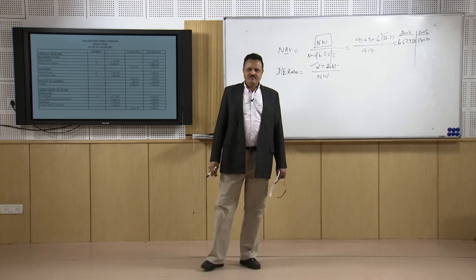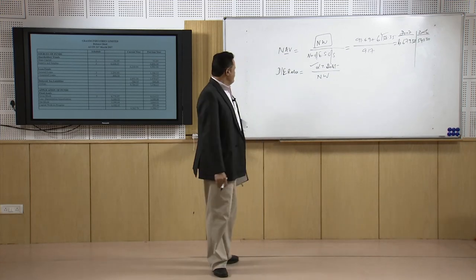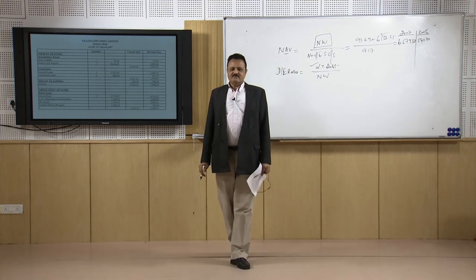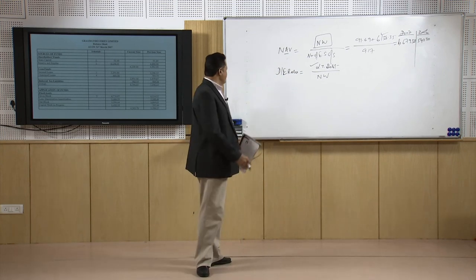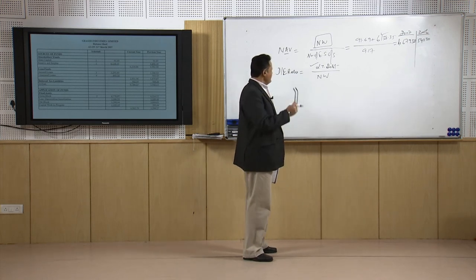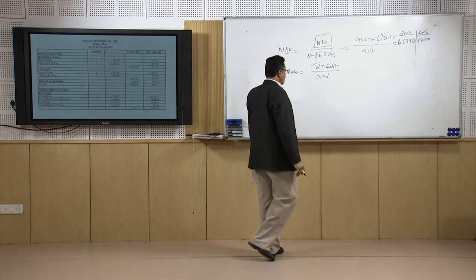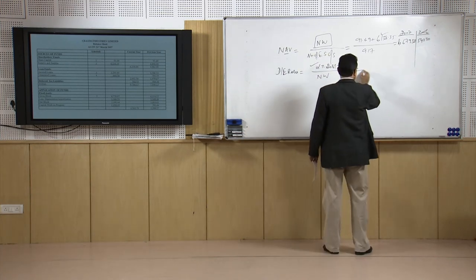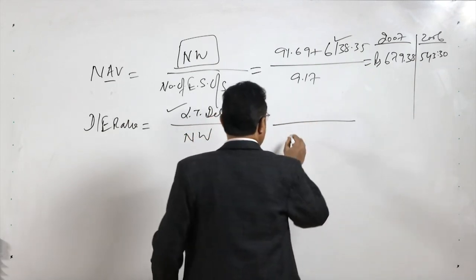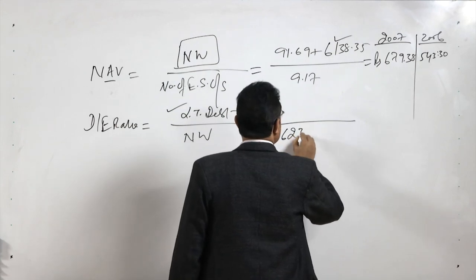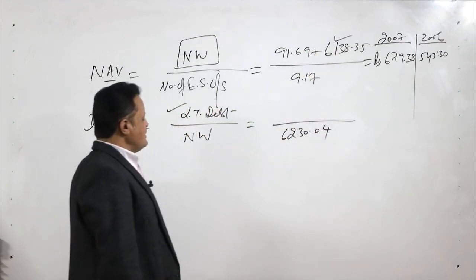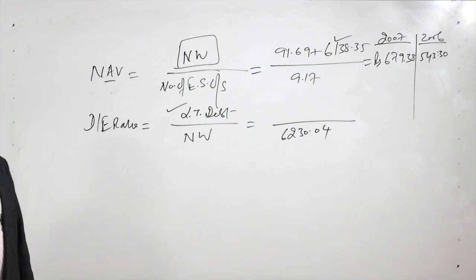To maintain consistency for studying the solvency of the firm, when calculating the debt equity ratio we take the year-end figure of reserve and surplus, and for the NAV we take the same figure. The debt equity ratio will be calculated using long-term debt and net worth. We have already calculated the net worth figure, which is 6,230.04 crores. So the denominator is set, and we have to calculate the numerator now.